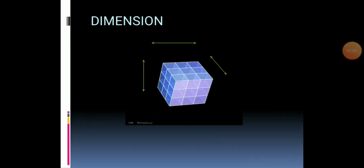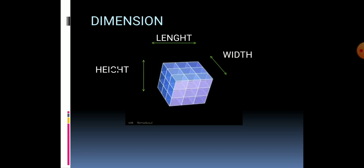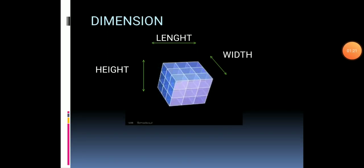Now let's understand the concept of dimension. An object has length, width, and height. Measurement of length, width, and height of anything is simply known as dimension. A line is one dimension. When we consider length and width, a plane is two dimensions. A space is three dimensions — like a cube, which is a three-dimensional shape.